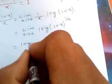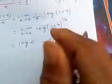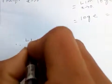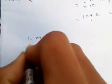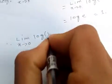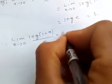So we have log of e, and we know that log of e is just 1. So limit x tends to 0 log of 1 plus x over x is equal to 1.